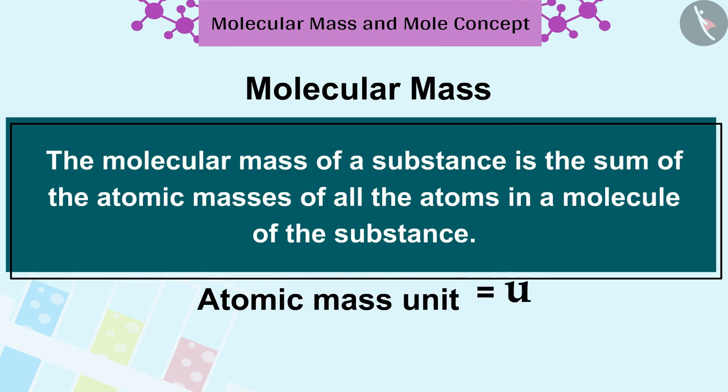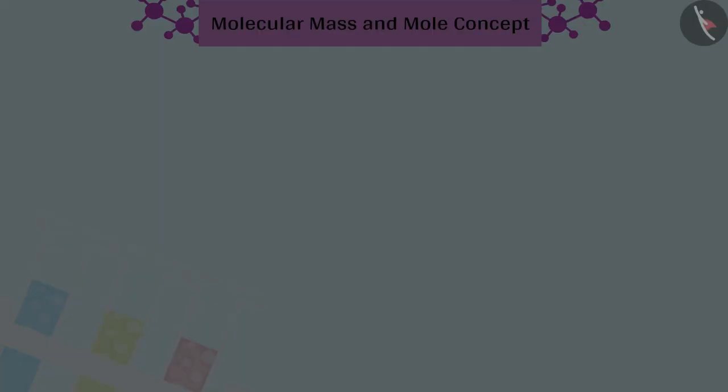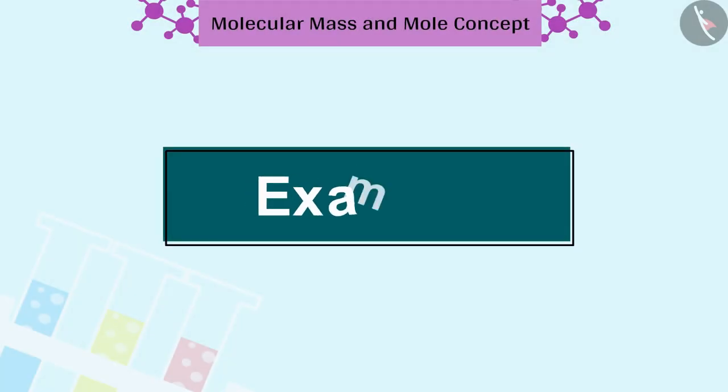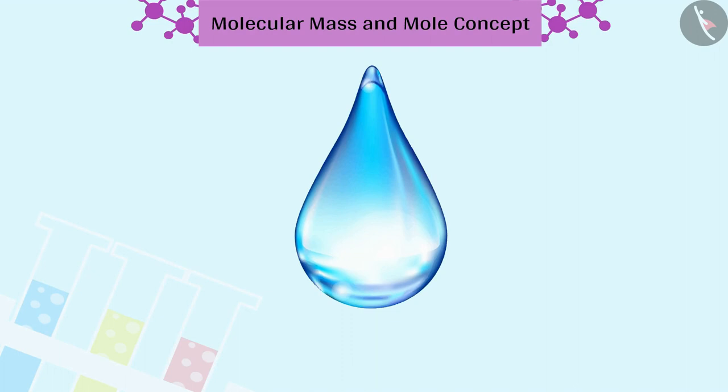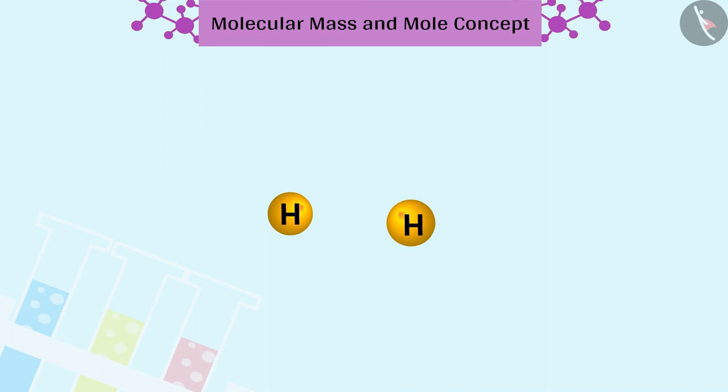Let us understand this by an example. Let us find the molecular mass of water H2O. Water is made up of hydrogen H and oxygen O atoms. The atomic mass of hydrogen is 1u and the atomic mass of oxygen is 16u.